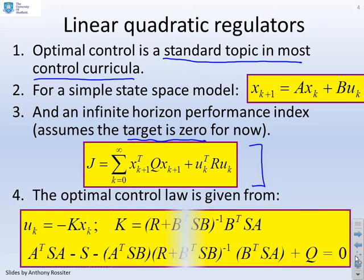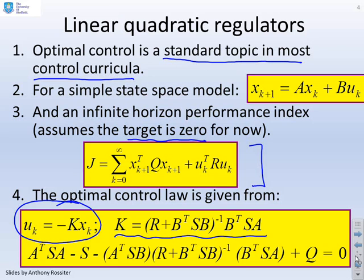Then the optimal control law is given by u_k equals minus Kx_k, where you've got these various expressions here telling you how K is defined in terms of things like R, B, A, and Q. That's well known.